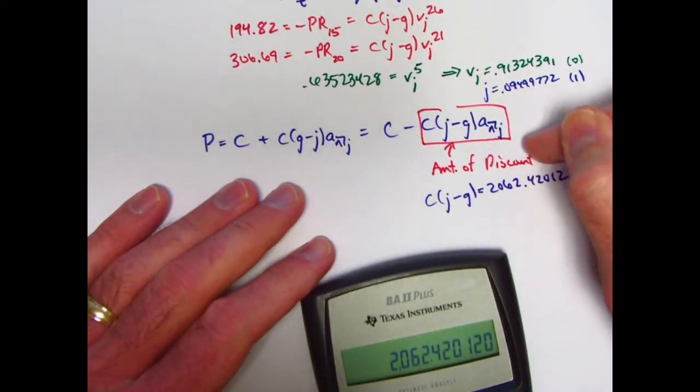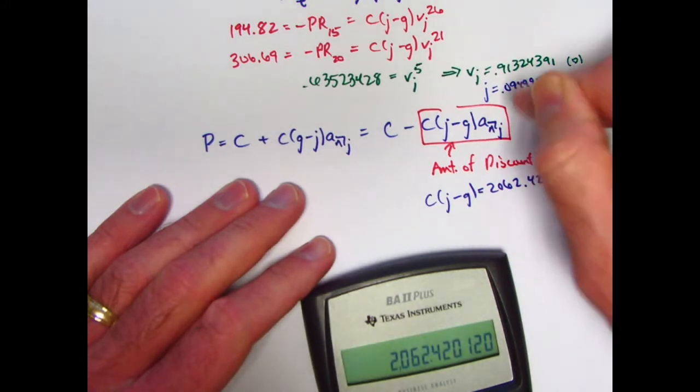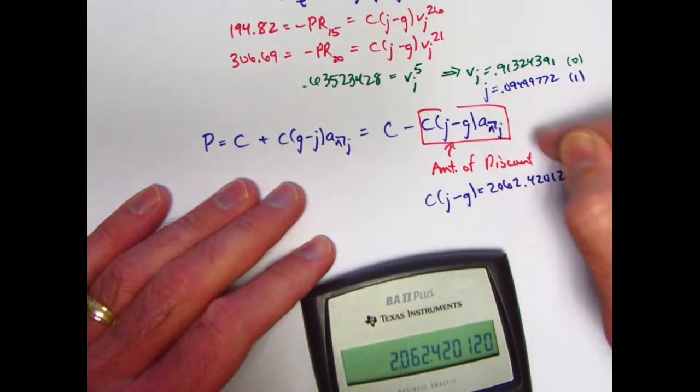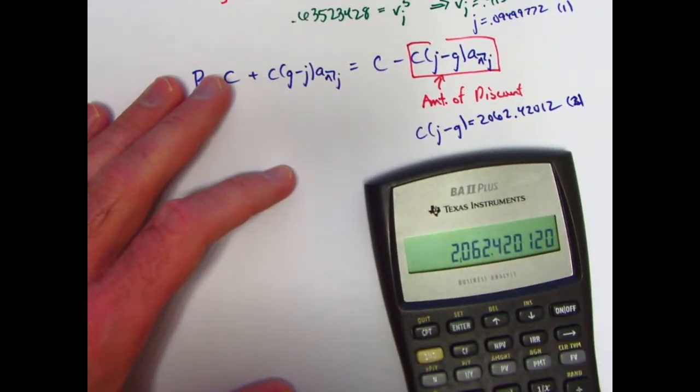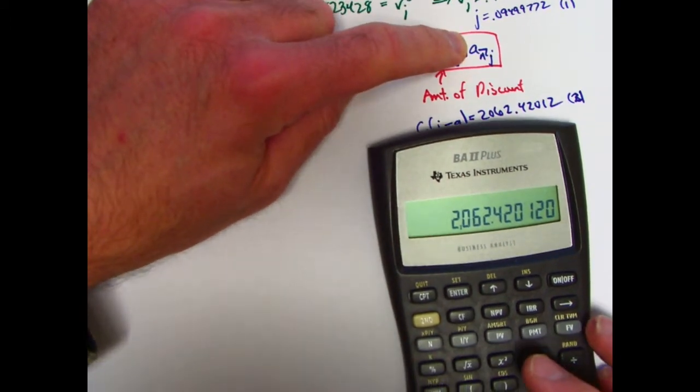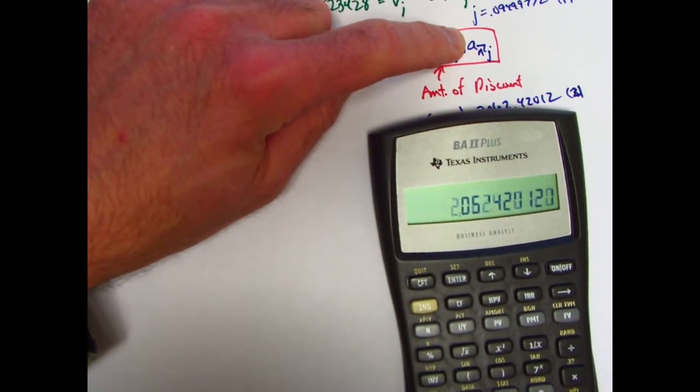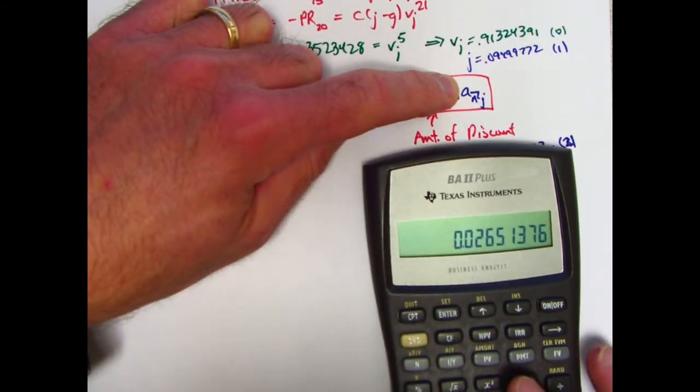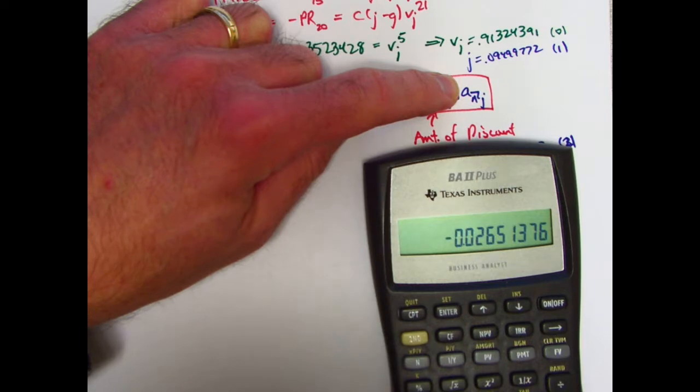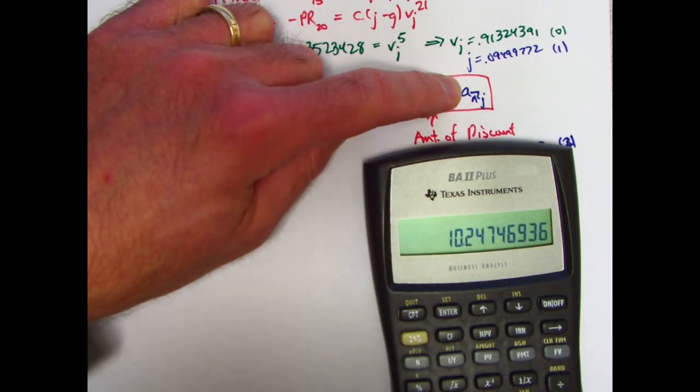Now, to find the amount of discount, take that, well, figure out a_n first, then multiply it by what's in register 2. So I guess it was good that I put it in register 2. So let's find a_n next, where n is 40. So I have v from register 0, raised to the 40th power, subtract that from 1, divide by j, which is in register 1. Looks like a_n is about 10.247469.